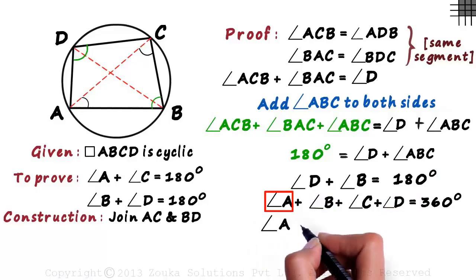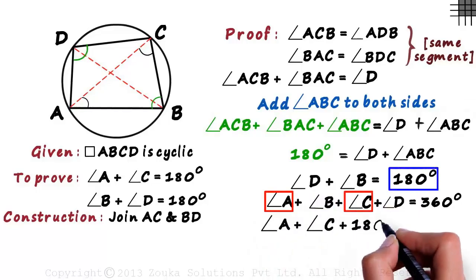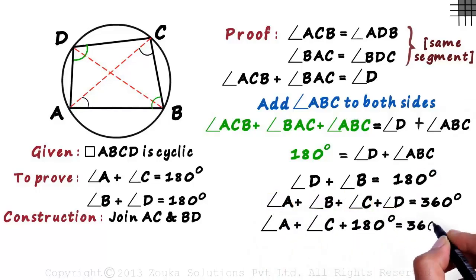So we get angle A plus angle C plus 180 degrees equal to 360 degrees. We just replaced B plus D with 180 degrees. Transposing 180 degrees to the right hand side, we get angle A plus angle C equal to 180 degrees.